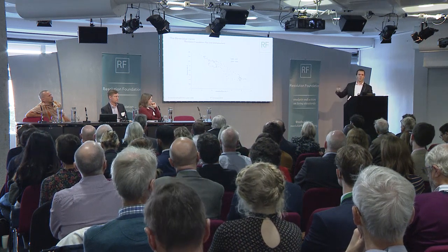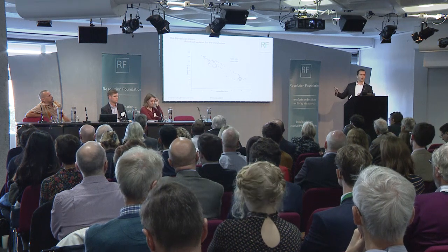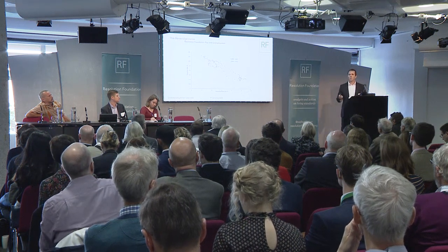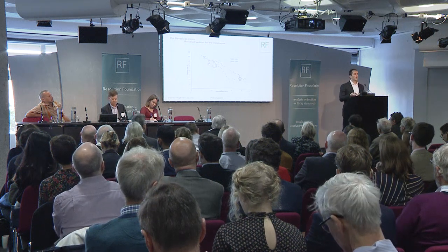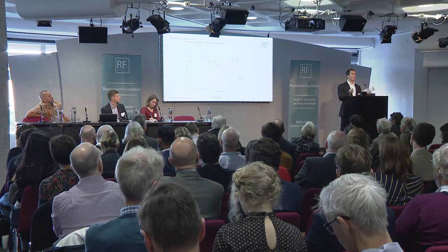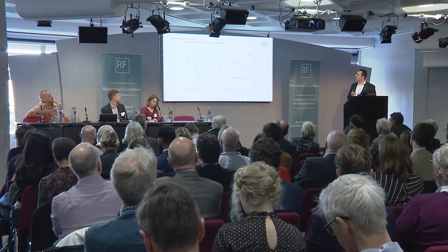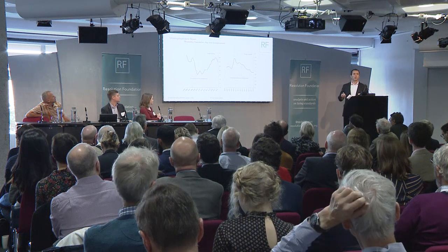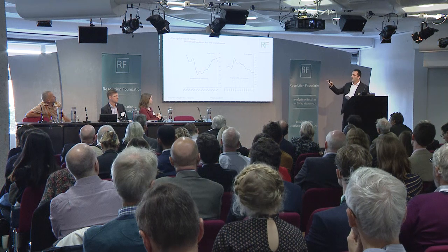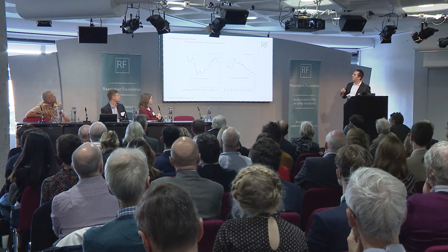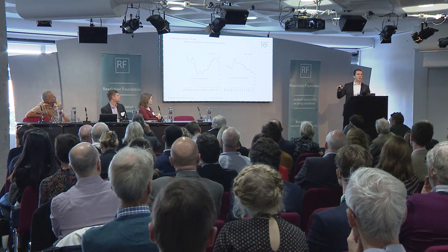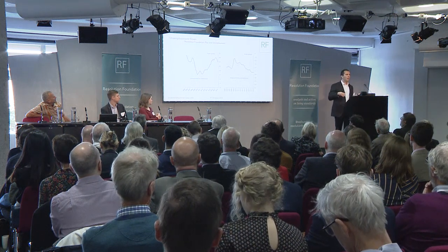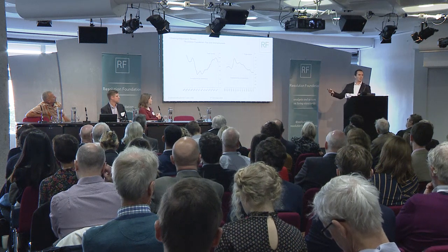When the labour market is this tight, we'd expect unemployed workers to be transitioning into employment at a fast pace. But the outflow from unemployment to employment is not that impressive once you condition on how tight the labour market is. About 27% of unemployed people transition into employment in the following quarter — roughly where it was pre-crisis — but given how tight the labour market is, we would have expected this rate to be higher.